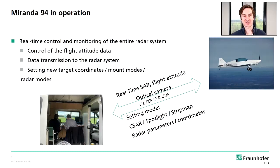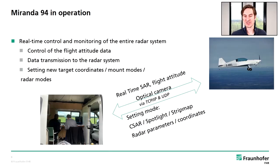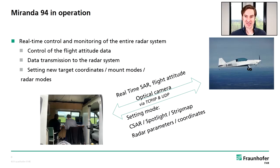In operation, the sensor is controlled by two people on the ground with two or three laptops. We have a data transmission channel to the radar sensor pod, so we can remotely control the whole SAR system: change parameters, set the mount to different modes, set new GPS coordinates, monitor the system, and run a low-resolution real-time SAR application. The pilot only has to fly; we control the system remotely. The data transmission link has a range of about 40 kilometers.